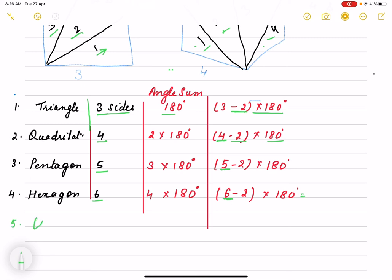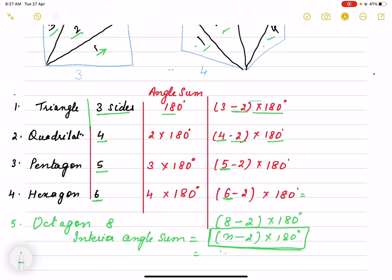So suppose if it is octagon, 8 sides, then how many sides? It is 8 minus 2 times 180. So we say that interior angle sum is (n minus 2) times 180. This is interior angle sum, so we can use this formula that if sides are 10, then what will be angle sum? If 8 sides, what will be the angle sum of that figure? So this way we find out.